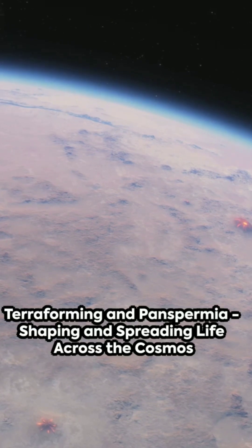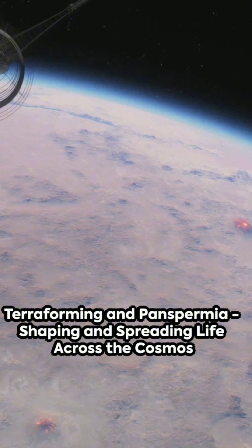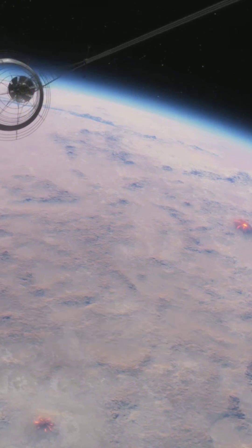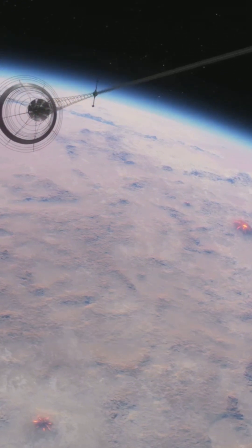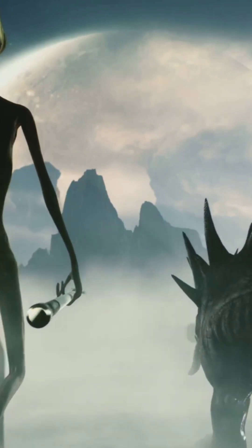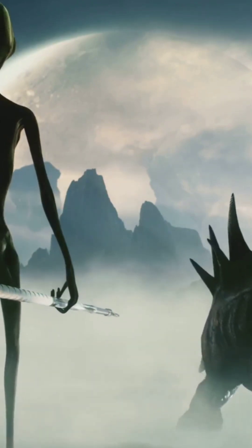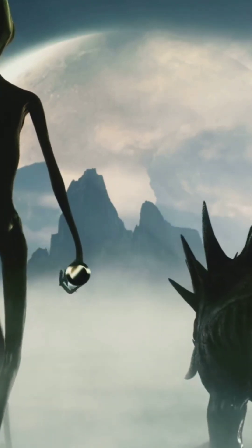Consider the concept of terraforming, transforming a planet to make it more Earth-like, or panspermia, the theory that life can spread from one planet to another. Think about parallel evolution, where similar life forms evolve independently on different planets.